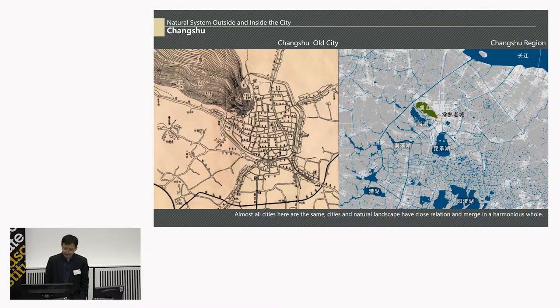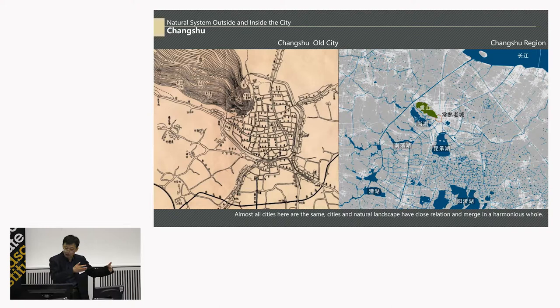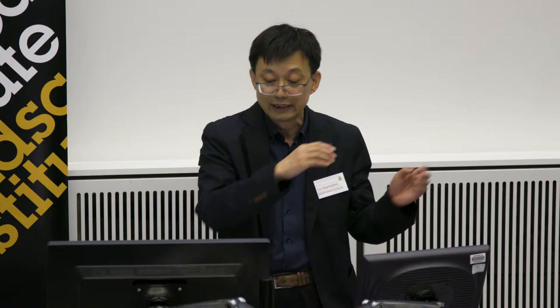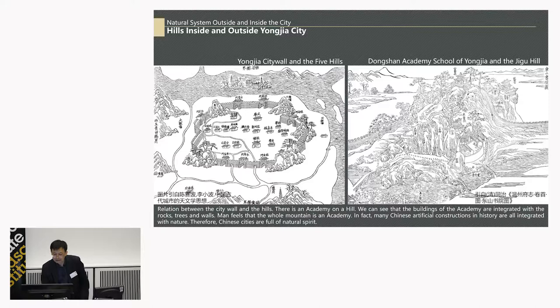We can see another city in this area — Changshu. Here too we see mountains, lakes, and the city, with the water network composed together, flowing from outside the city to inside, and then to the big river. The city wall climbs over the mountains, so part of the mountain is inside the city and another part is outside. The nature inside and outside the city are connected together.